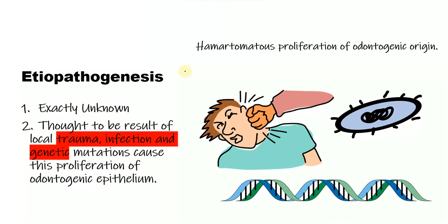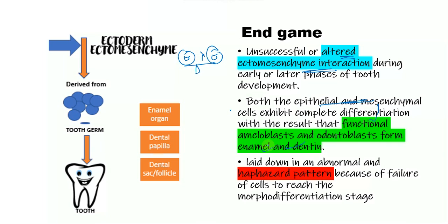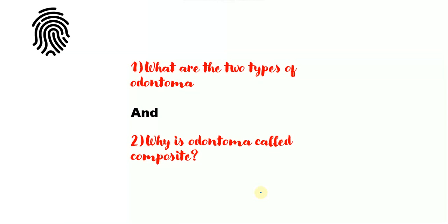In its etiopathogenesis, the exact cause is unknown but it is thought to be a result of trauma, infection, and genetic mutation. The final result is an altered ectomesenchyme interaction — the interaction between the epithelium and the ectomesenchyme is altered, resulting in the formation of epithelial and mesenchymal cells with complete differentiation laying down enamel and dentin, but in a haphazard manner due to the lack of morphodifferentiation. Before moving to the clinical features, two questions: what are the two types of odontoma, and why is odontoma called composite?